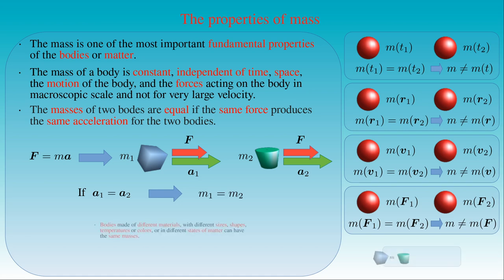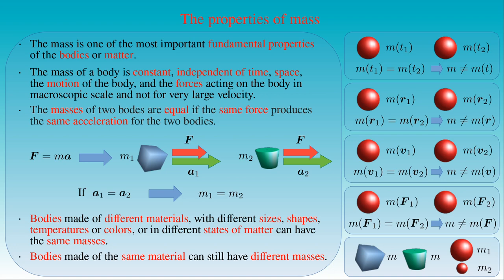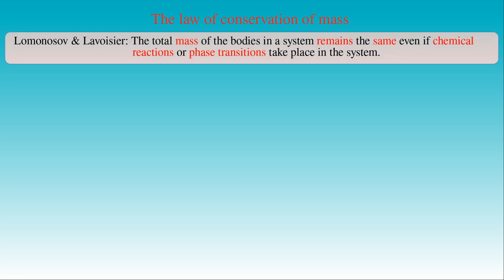The last property of mass we discuss here is extremely important — not only in mechanics but in all branches of physics. This property is the conservation of mass. The law of conservation of mass was proven experimentally by Lomonosov in 1756 and by Lavoisier in 1773, and it states: the total mass of the bodies in a system remains the same even if chemical reactions or phase transitions take place in the system. This principle claims that conservation of mass holds in any situation. The first case is mechanical transformation of a system, where the mass of a body or collection of bodies never changes, no matter how the constituent parts rearrange themselves.